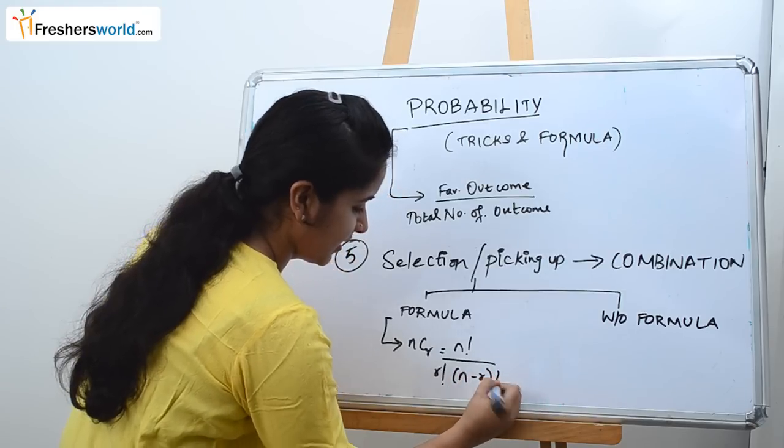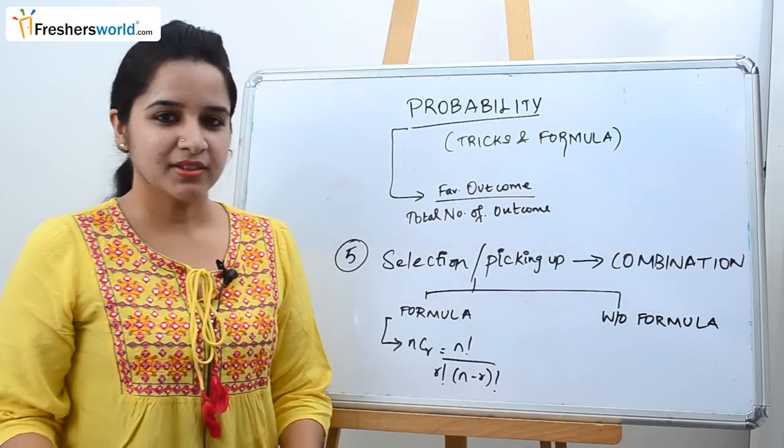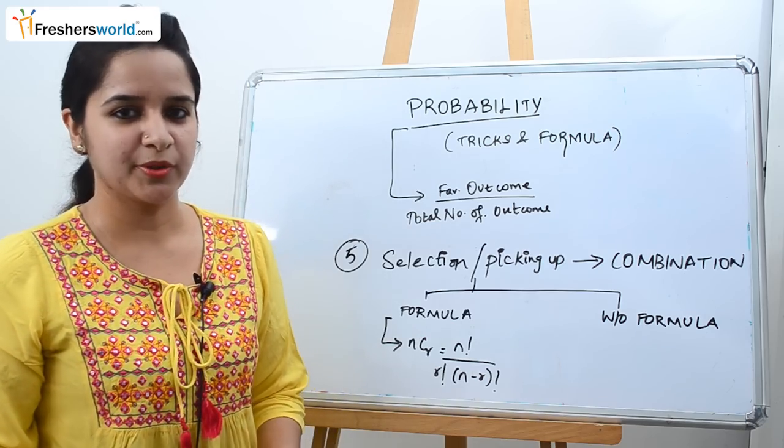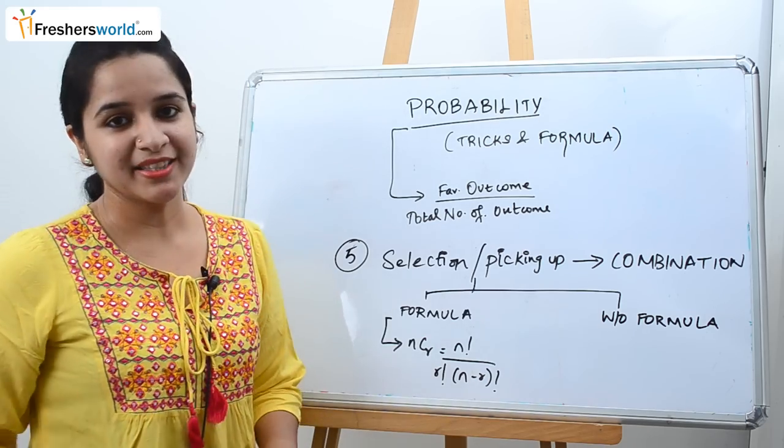So we know the general formula for combination is nCr equals n factorial divided by r factorial into n minus r factorial. Let's say you are a person who can't remember a lot of formulas when it comes to aptitude exam. Then here comes the easy method.